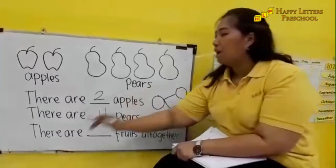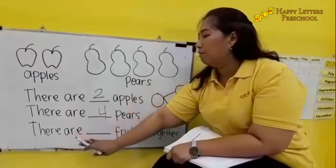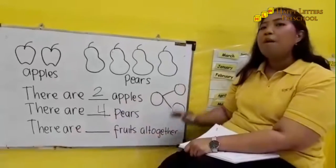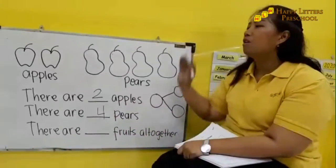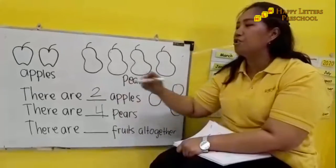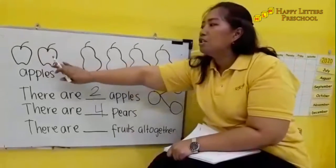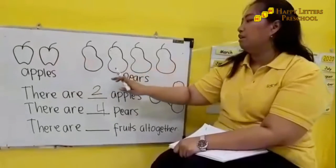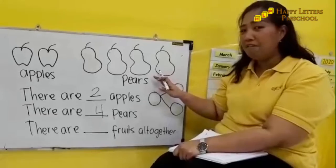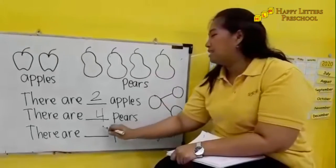Now there are blank, blank, blank fruits altogether. Altogether means that we have to count all of the fruits. Let's count all of the fruits together. One, two, three, four, five, six. How many fruits do we have? Nice one! Six.